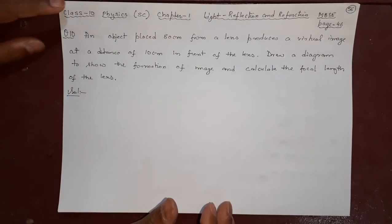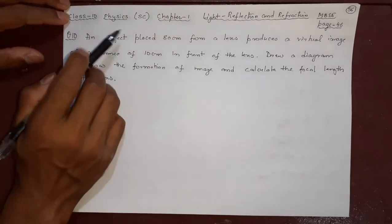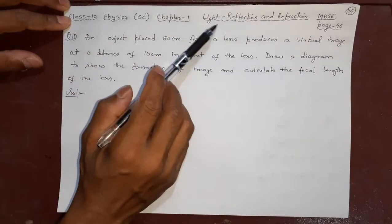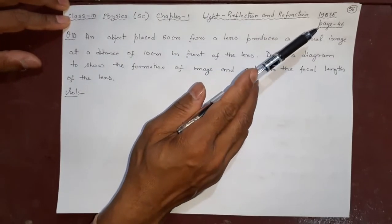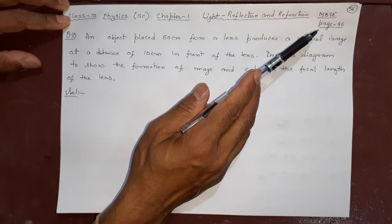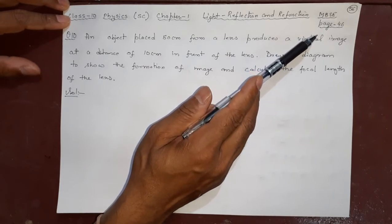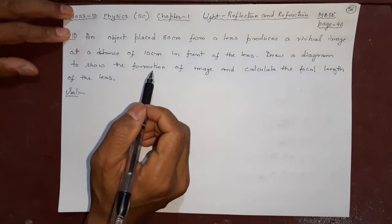Welcome viewers to SD online classes. In this video we will do Class 10 Physics, Science Chapter 1, Light, Reflection and Refraction from the MBAC textbook page 46. In this question, it is on lens.